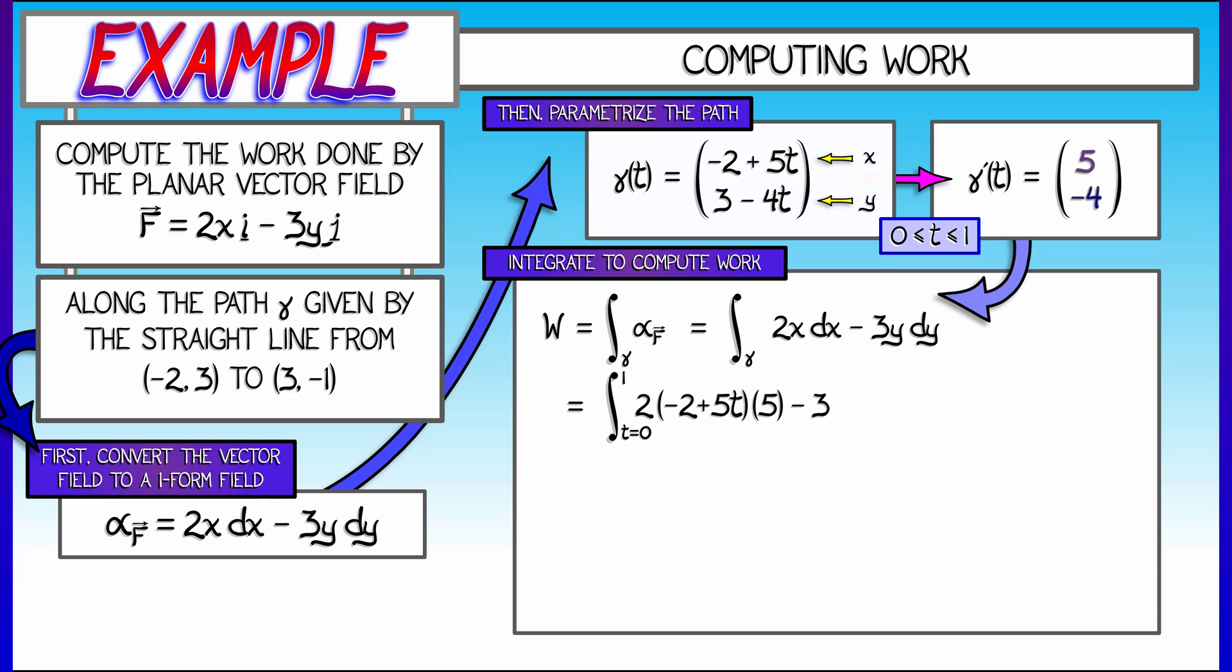Then, for the second term, we take negative 3 times y, which is 3 minus 4t, times dy, which is negative 4dt. Now, expanding all of that out and simplifying that integrand gives us the integral of 2t plus 16. As t goes from 0 to 1, that's a simple integral. That is going to give you a final answer of 17.